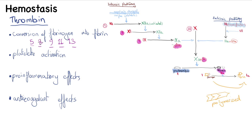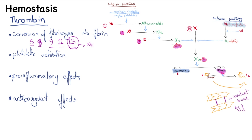A memory tip: count five odd numbers from number five, then substitute seven with eight — giving factors 5, 8, 9, 11, and 13. Factor 13 covalently cross-links fibrin strands, helping stabilize the clot. Factor 13 is also activated by thrombin.